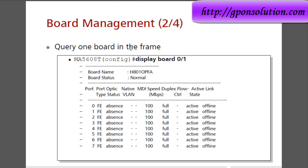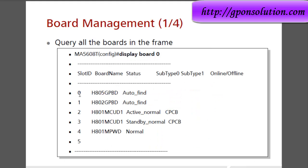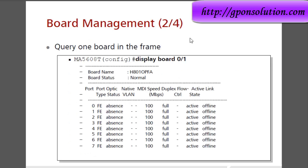To query one board in the frame, use the command 'display board 0/1'. This shows board 0, slot 1. Here another card has been added. The board name and board status is shown as normal. This board has 8 ports plus an Ethernet port.